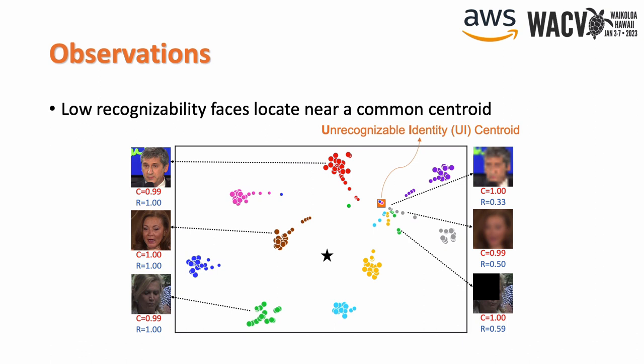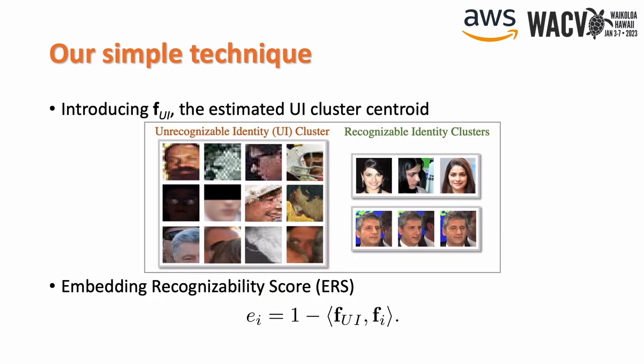Here we visualize the phenomenon in the embedding space with a T-SNE illustration, where we indicate the UI centroid with an orange square. Notice that this UI centroid is also distinct from the average embedding of the recognizable faces, marked with a black pentagon. As faces with low recognizability can be gathered into one group by distance-based clustering, we can estimate the centroid of this cluster with the normalized average embedding representation of the UI examples.